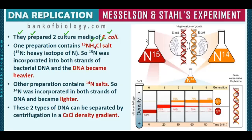N15 was incorporated into both strands of the bacterial DNA and the DNA became heavier. The other preparation used normal ammonium chloride salt, NH4Cl, with normal nitrogen N14 — there were no heavy strands, the DNA was normal and lighter. These two types of DNA can be separated by centrifugation in a cesium chloride density gradient, which allows us to separate the two DNA types.